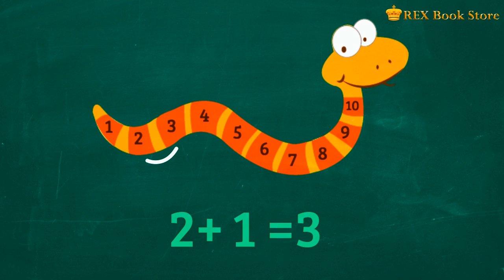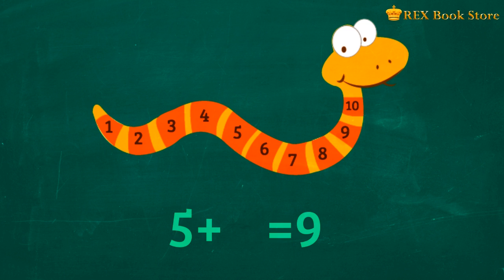How about this? Five plus blank is equal to nine. Let's count on from five until nine. One, two, three, four. How many times did we count on? Four. So five plus four is equal to nine.